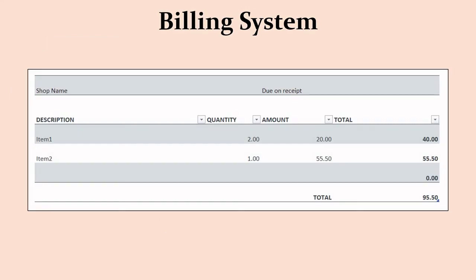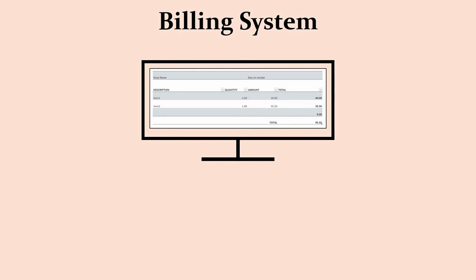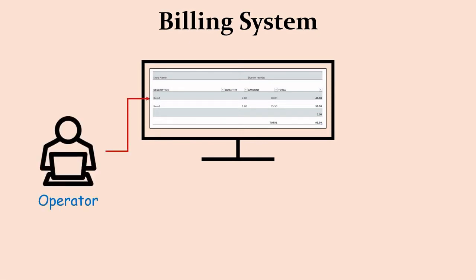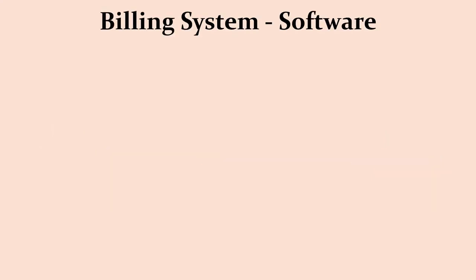All of us would have visited a supermarket or a small shop, so a form like this may be familiar to you. This is a sample of how the data entry form in a billing application looks like. The billing application is on a computer — an operator sits in front of the computer and attends to customer requests. The operator keys in the product information, the billing application communicates back the rate and discounted rates, and once all products are entered, the operator submits and generates the bill. The computer is connected to a printer that prints the bill for the customer.